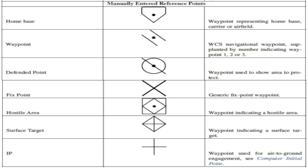The first is Home Base. Home Base will be automatically entered if your flight plan includes a waypoint of the type 'landing'. However, if you would like to place one manually, you can enter a nav point with the code HB for home base — you simply enter these characters in as the comment.